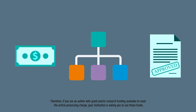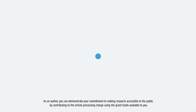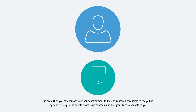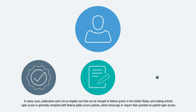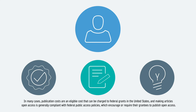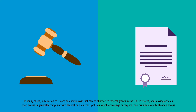As an author, you can demonstrate your commitment to making research accessible to the public by contributing to the article processing charge using the grant funds available to you. In many cases, publication costs are an eligible cost that can be charged to federal grants in the United States, and making articles open access is generally compliant with federal public access policies, which encourage or require their grantees to publish open access.